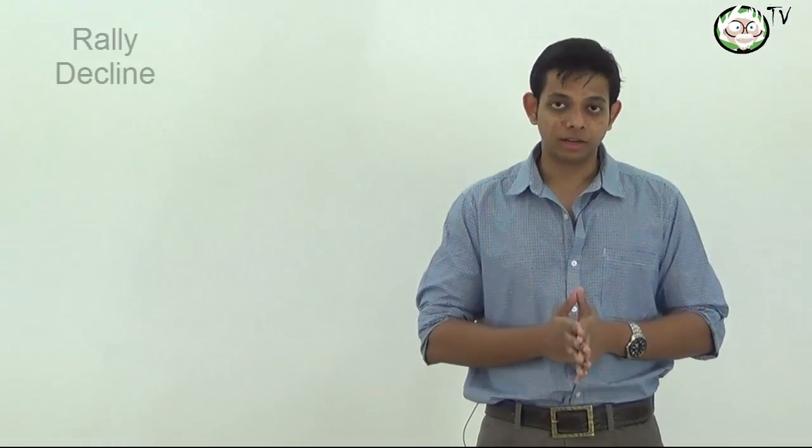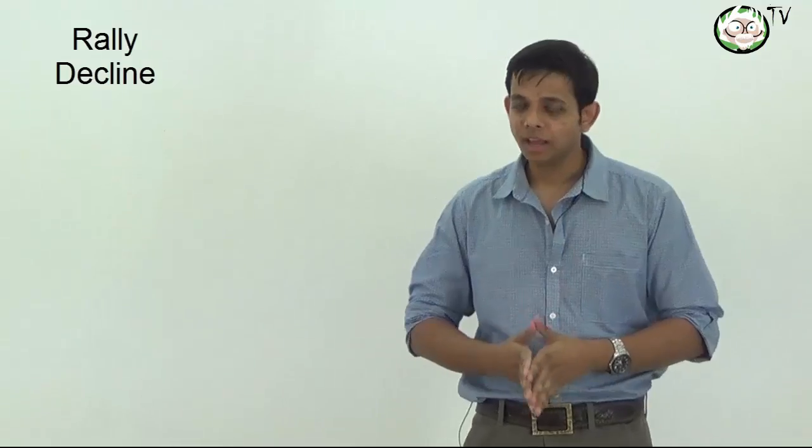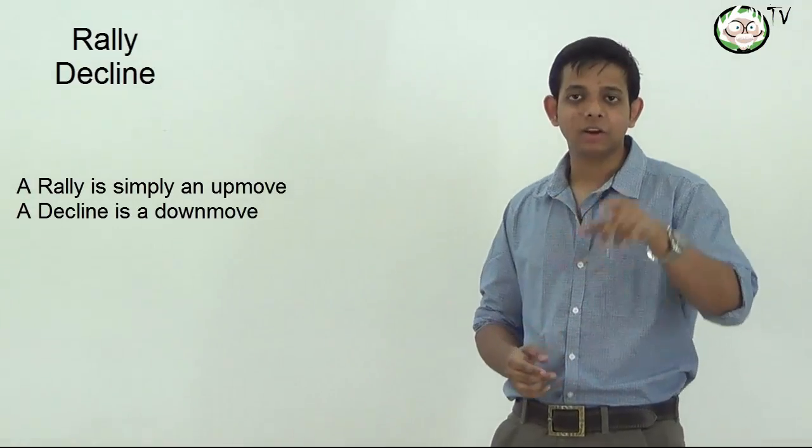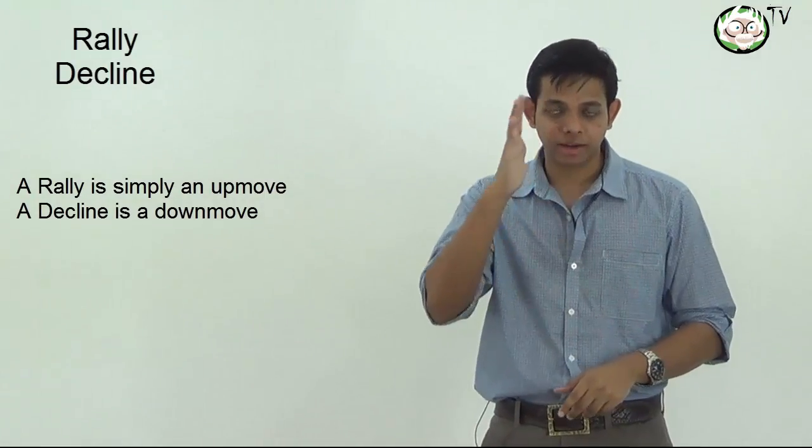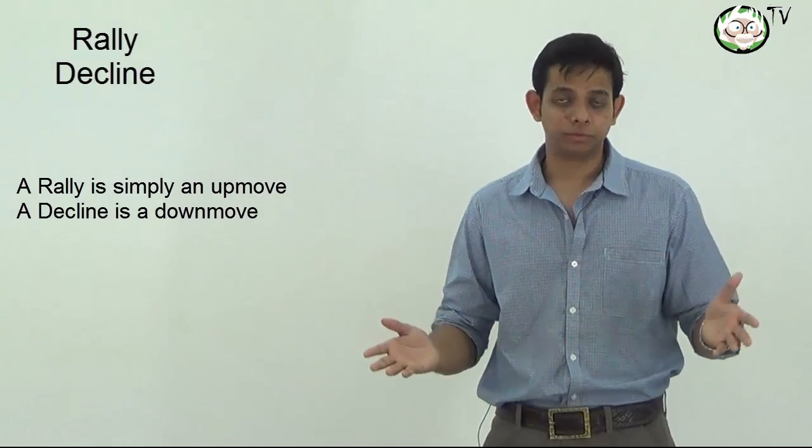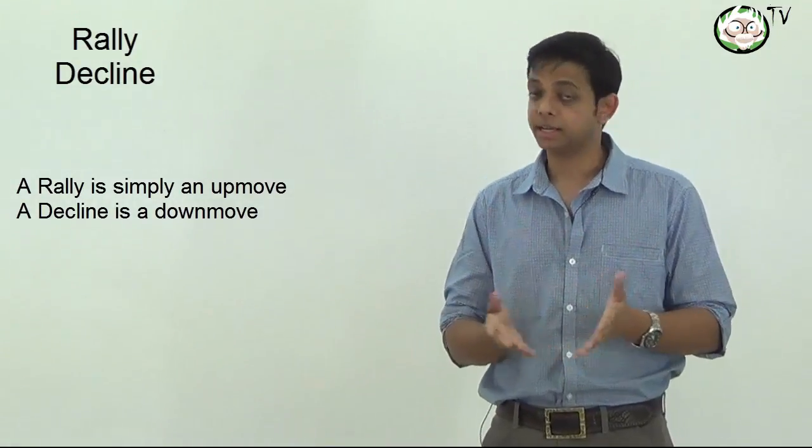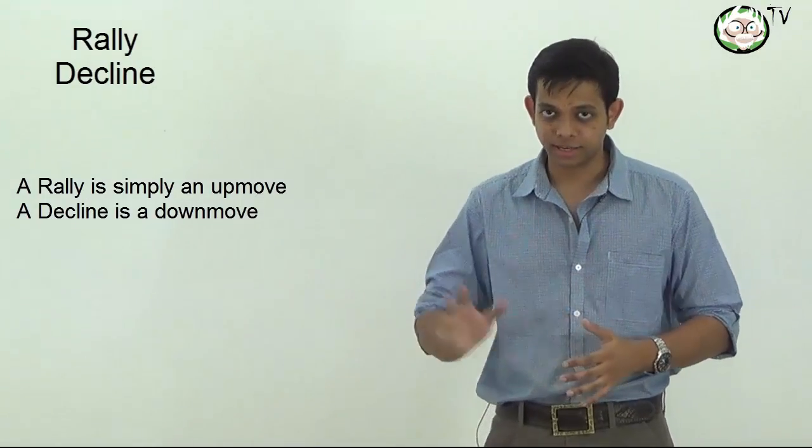So the first thing we're going to learn is about a rally and a decline. A rally and decline are seen on a per bar basis, meaning we're looking at only one bar and the next. Simply put, a rally is simply an up move and a decline is simply a down move. They together form something more important which we'll discuss later.